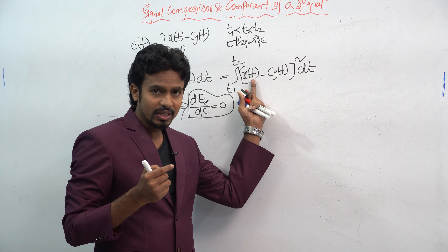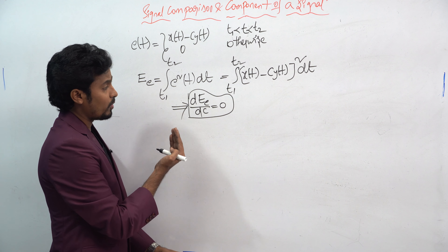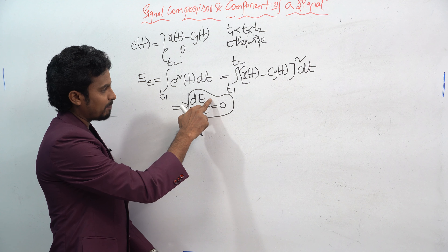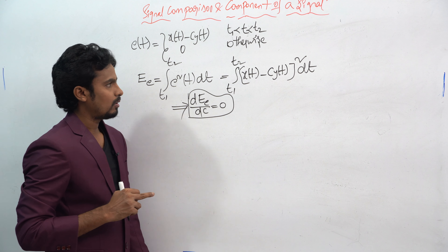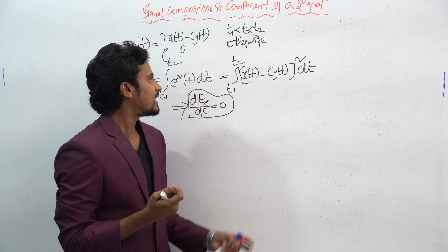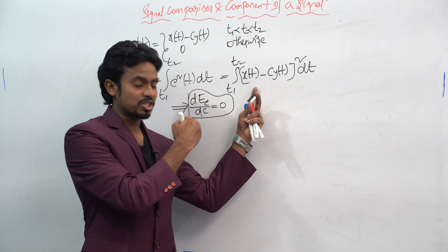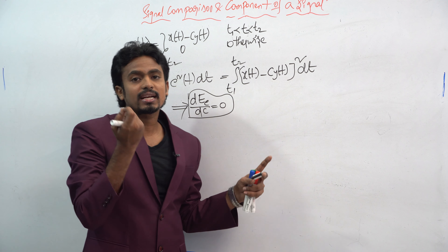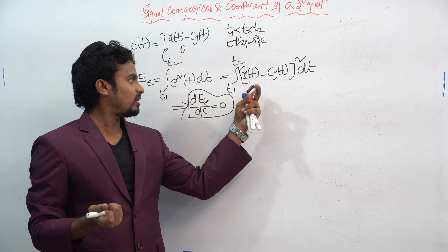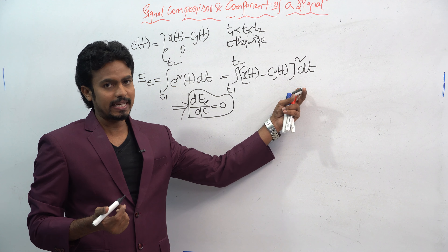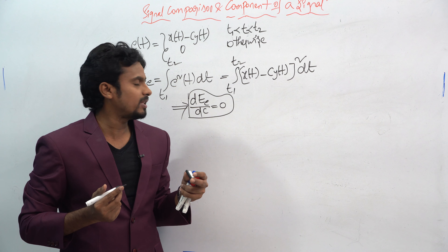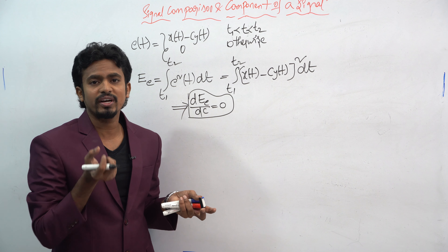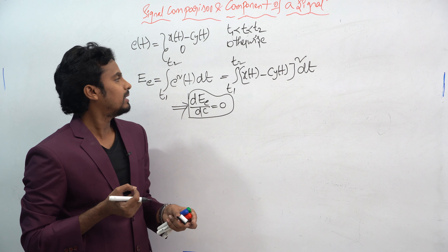Here t is the dummy variable in the definite integral, and we minimize the error capital E with respect to c. When we differentiate with respect to c, since c appears inside the integral, there is an error term present. We need to try to minimize that error and check the final conclusion for c.